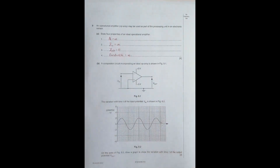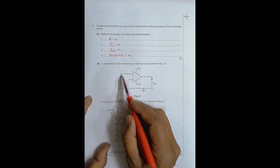On the axes of figure 9.2, we have to draw a graph showing the variation with time t of the output potential V_out. Since this amplifier has no feedback, it has a maximum gain of infinity, so the output voltage tries to go to infinity but is limited only by the power supply.